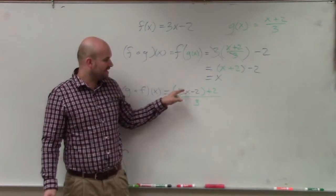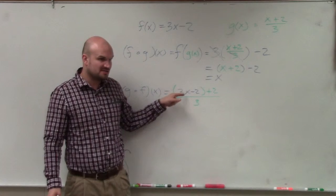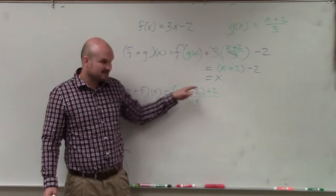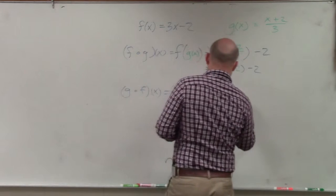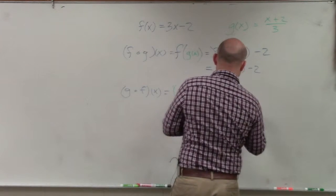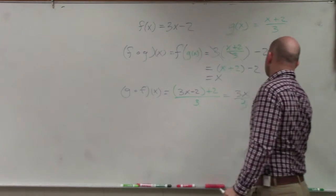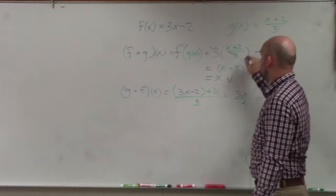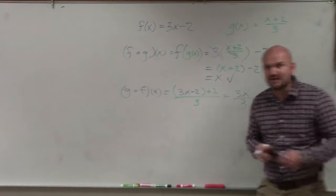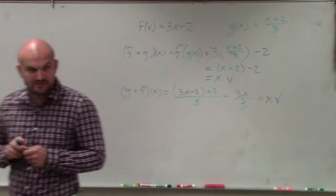Now, we just simplify. Again, I'm not multiplying these parentheses by anything. So I can just add and subtract the 2's, which leaves me with 3x over 3, which just simplifies to x. Since they both simplify to x, we can verify that those are inverses of each other.